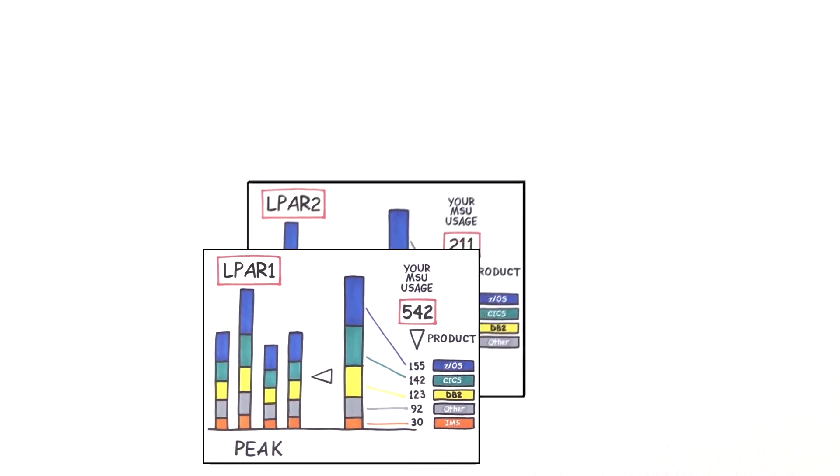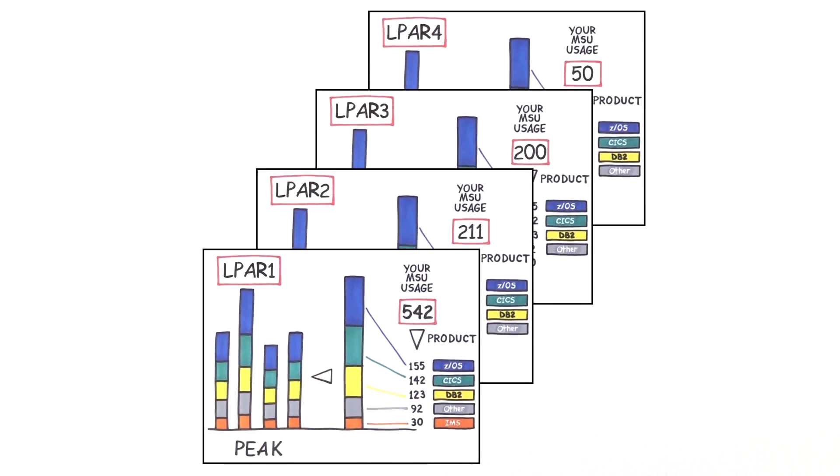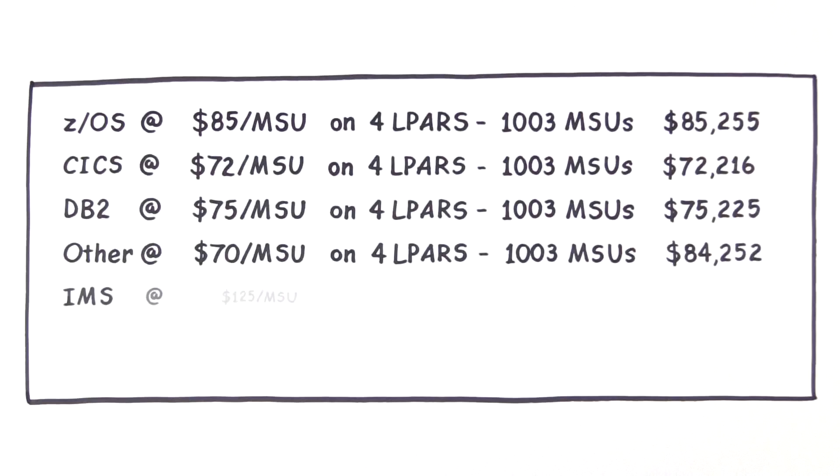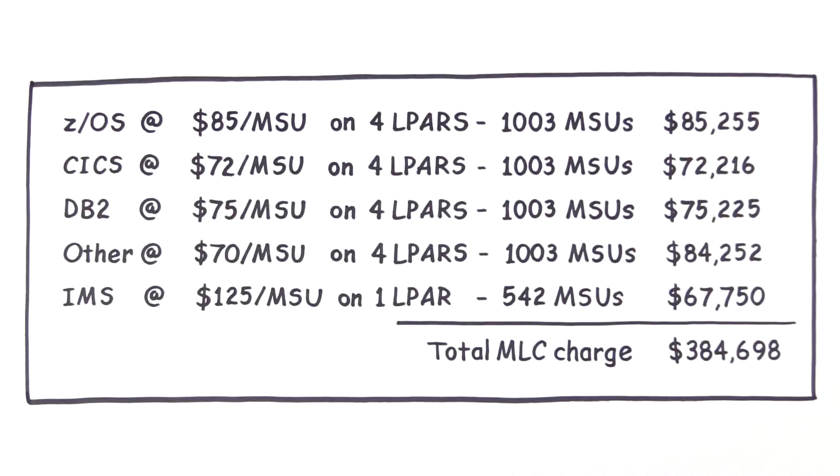And if you're running multiple LPARs like most shops, it gets even more complex. Your MLC charges are based on the highest total peak across all LPARs where each product runs, which makes tracking the peak really complicated.